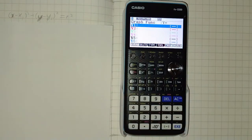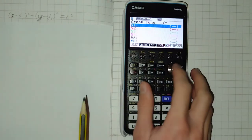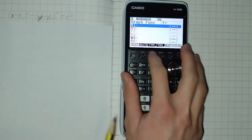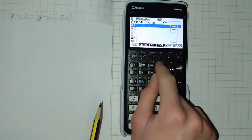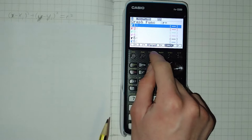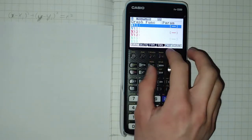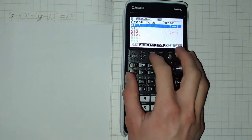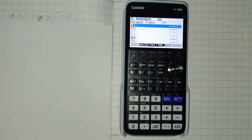The standard graphing mode is only able to plot graphs that are y equals or by changing the type x equals, r equals, or parametric and the inequalities as well. However none of these are quite sufficient for plotting the circle in this form.